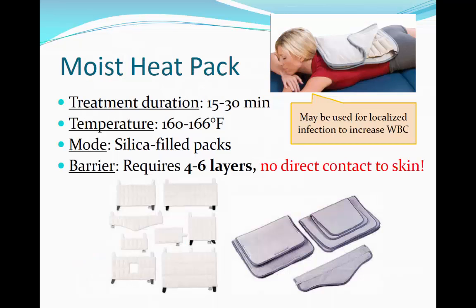Moist hot packs are silica-filled packs stored in hot water between uses. The packs are removed from heating, wrapped in a terry cloth cover or towel, and used to deliver moist heat to the body. The resulting temperature increase is localized to superficial tissues. Moist hot packs are good for subacute or chronic inflammation, and subacute or chronic pain. Indications include acute or chronic inflammation, subacute or chronic pain, subacute or chronic muscle spasms, decreased range of motion, hematoma resolution, increased muscle/tendon/fascial elasticity, and reduction in joint contractures. Contraindications include acute injuries, peripheral vascular disease, impaired circulation, and poor thermal regulation. We need to take precaution that there is no direct contact with the skin, and we do not lay on hot packs.